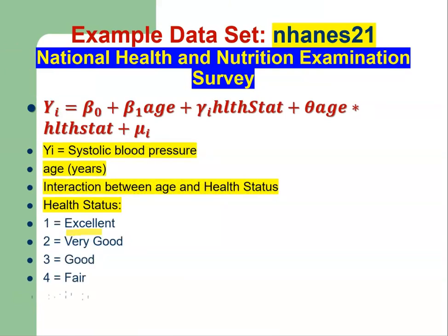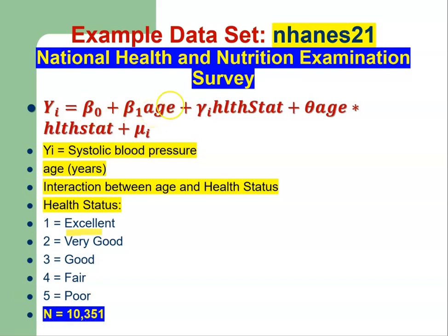This is my model that I am going to estimate. The data contains 10,351 observations. Yi is my dependent variable — that is systolic blood pressure. This is the intercept of the model, and this is the coefficient of age. Age is a continuous independent variable. Health status is a categorical or indicator independent explanatory variable, and theta is the interaction coefficient between age and health status. This is the random error or stochastic disturbance term. Health status has five categories: excellent, very good, good, fair, and poor.